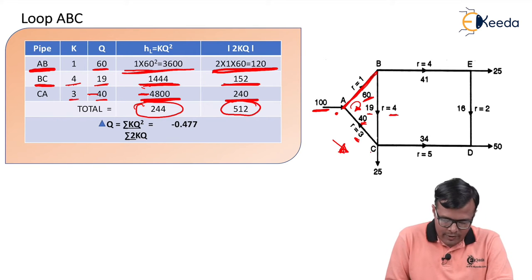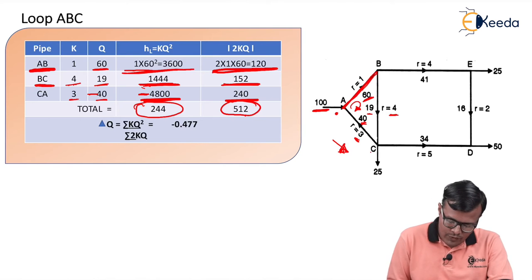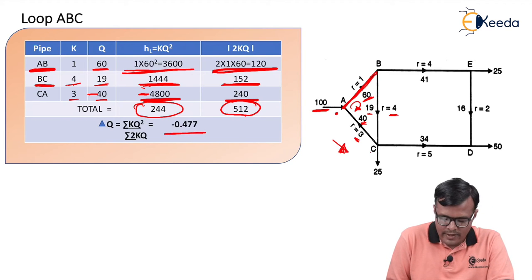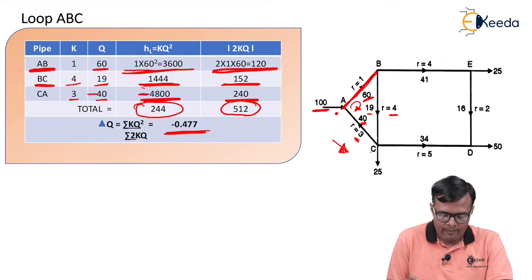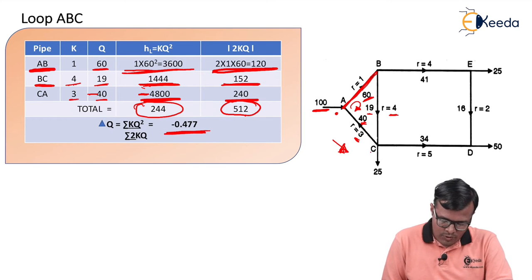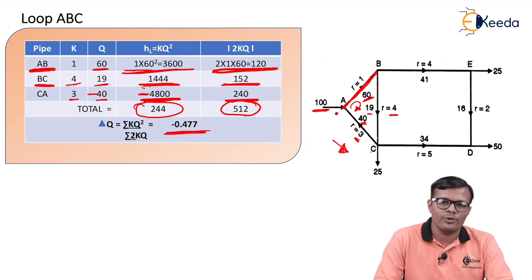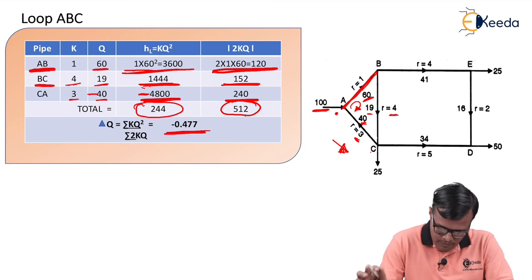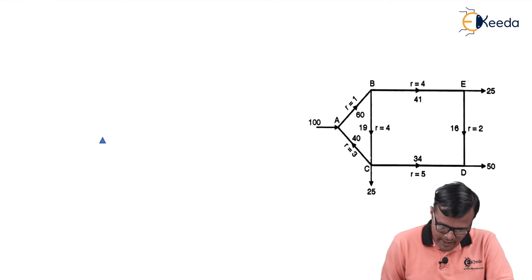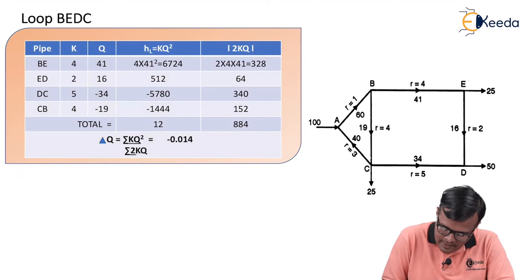After taking the totals, the sum of K×Q² values is 244 and the sum of 2×K×Q values is 512. Dividing 244 by 512, we get delta Q = 0.477. We will now consider the next loop, that is loop B-E-D-C.